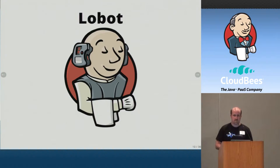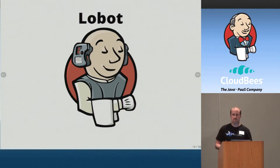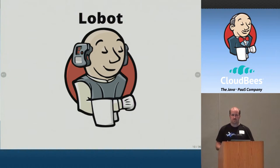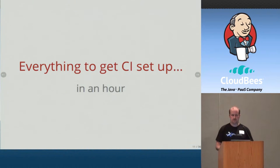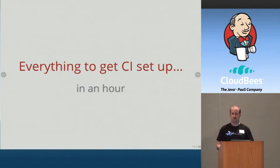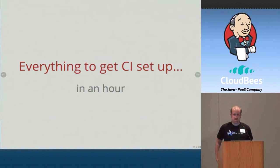What we came up with was Lobot — a gem we use for configuring CI. The goal is that a project can get an EC2 account. We create a new EC2 account for each project, they get that in their email, and about an hour later they can have a CI box on EC2 running their tests.